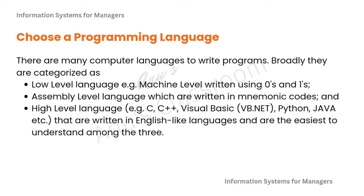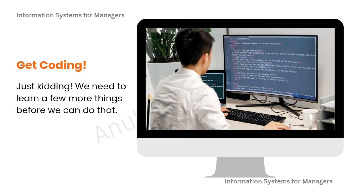High-level languages include C, C++, Python, JavaScript, Scala, Ruby, and others. They are written in English-like languages and are the easiest to understand among all three types. So before we get to coding, we need to learn a few more fundamentals.